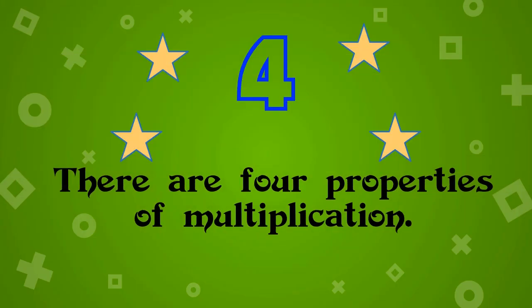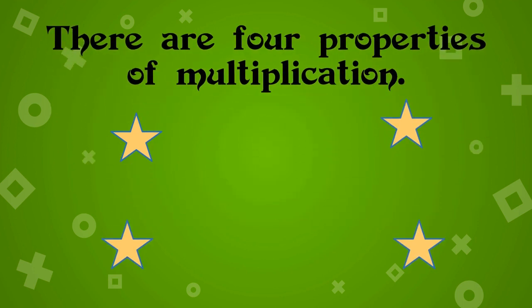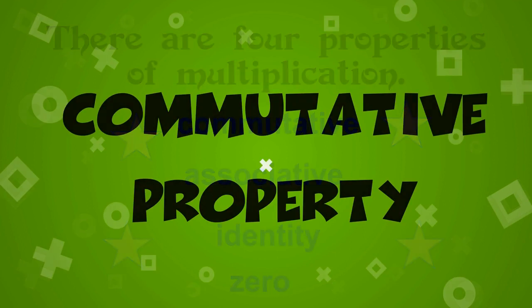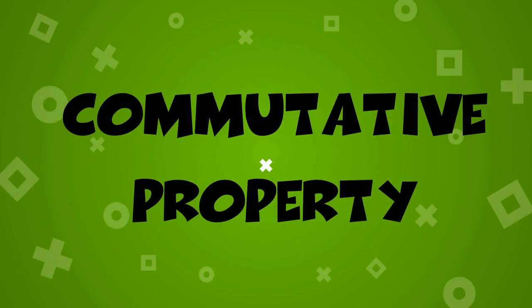There are four properties of multiplication. What are they? The four properties of multiplication are the commutative, associative, identity, and zero property. Let's begin with the commutative property.